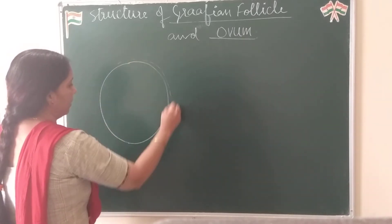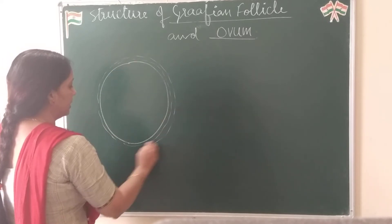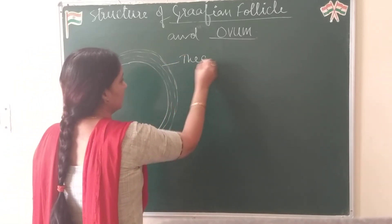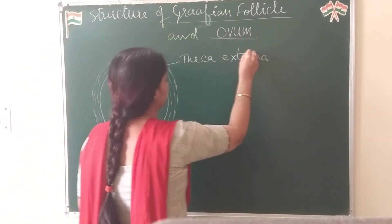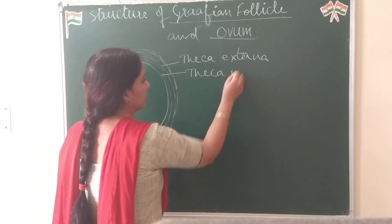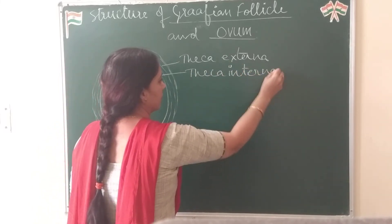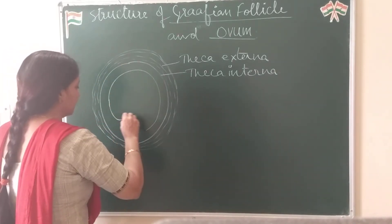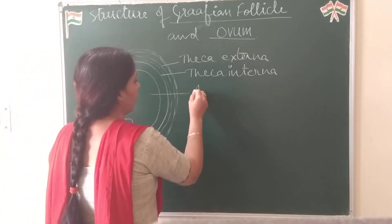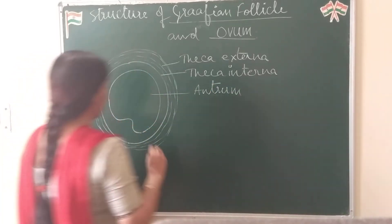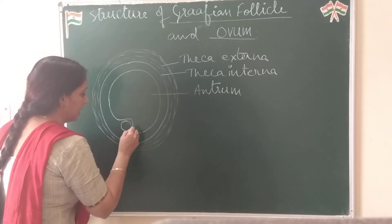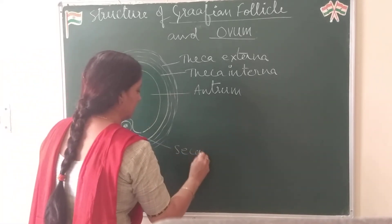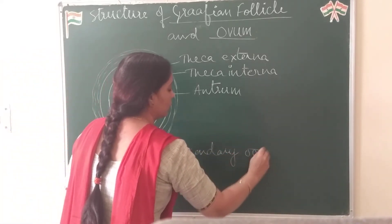Each Graafian follicle is surrounded by two layers called theca layers, named theca externa and theca interna. Inside theca interna there is a big cavity called the antrum, and here we have the secondary oocyte.